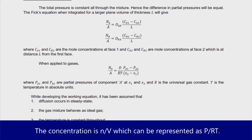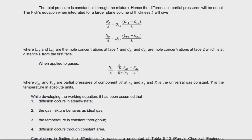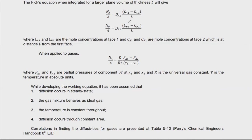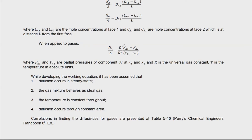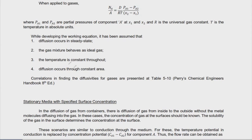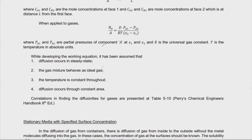Using the ideal gas law, there is a pressure gradient between P_A1 and P_A2, and x₂ − x₁ is the thickness. You take the diffusivity constant D divided by RT to get the same flux N_A/A. So for gases, instead of concentration C you use pressure, with the universal gas constant and temperature. Key assumptions are: diffusion is steady state, the gas mixture behaves ideally, temperature is constant throughout, and diffusion occurs through a constant area.